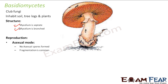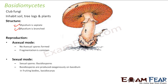In asexual reproduction, no asexual spores are formed. Instead, fragmentation is more common. Fragmentation means the mycelium breaks into pieces and each fragment is capable of giving rise to a new mycelium. So spore formation is not seen here, but fragmentation is the common mode of asexual reproduction.